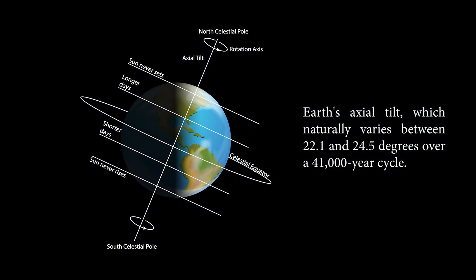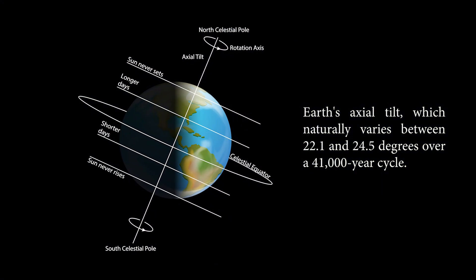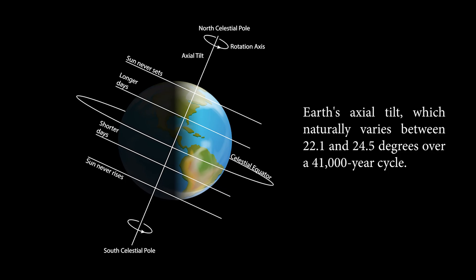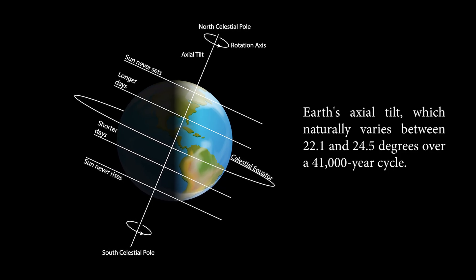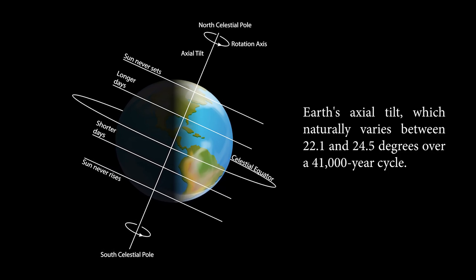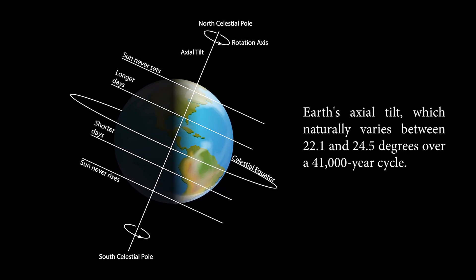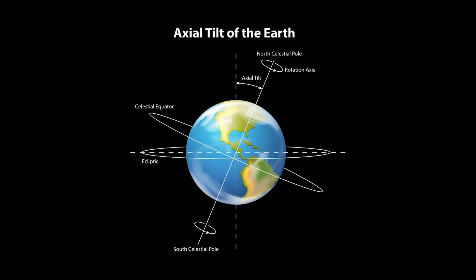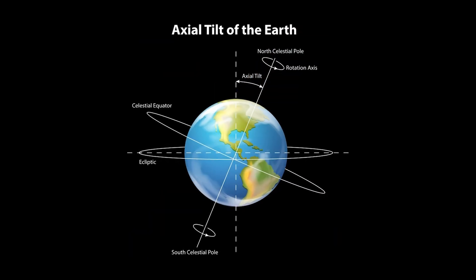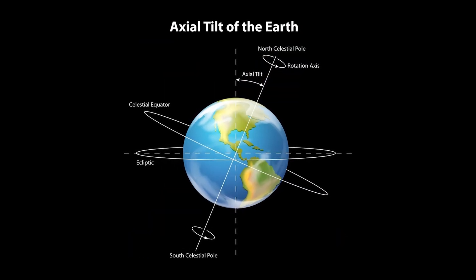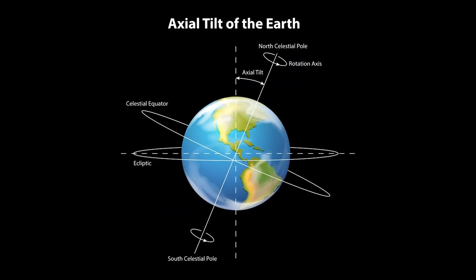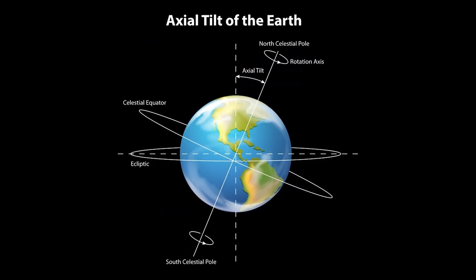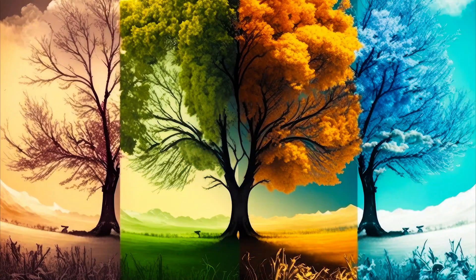Earth's axial tilt naturally varies between 22.1 and 24.5 degrees over a 41,000-year cycle. Without the Moon, Earth's tilt could fluctuate wildly and unpredictably, moving beyond this range and causing severe and erratic climate changes.